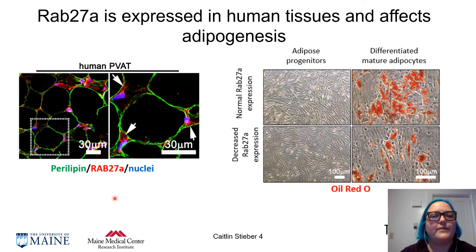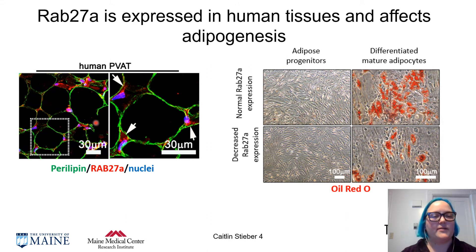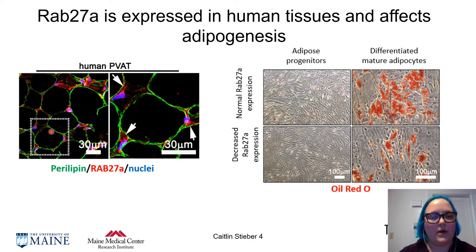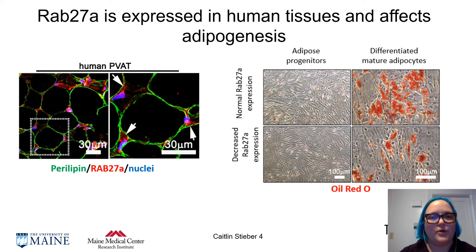What we have found so far is that RAB27A is expressed in human PVAT, and you can see that here in this human PVAT sample from a CABG donor. You can see in green, you have perilipin, which is a lipid coat marker surrounding the lipid droplets, and then also in red, you have RAB27A. This is important because our target protein is expressed in our target tissue.